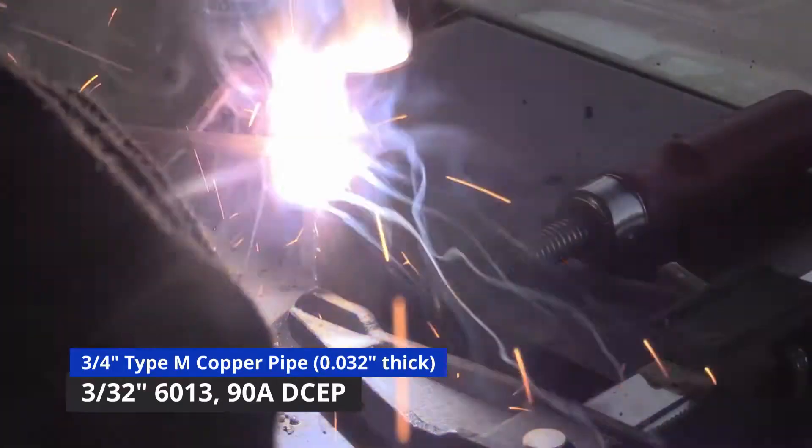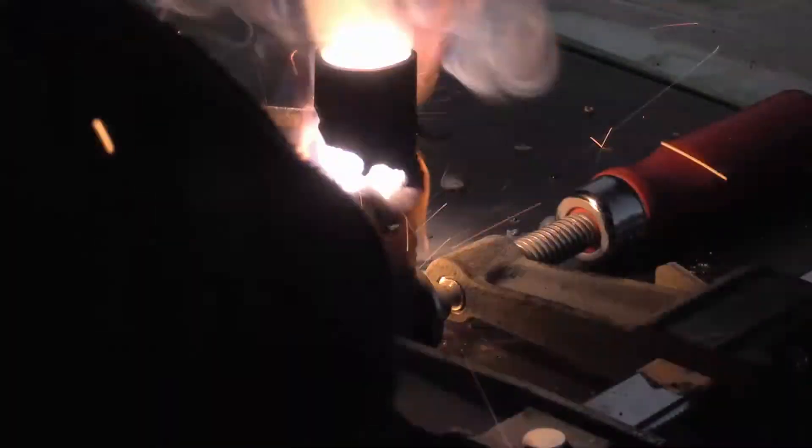The welding rod burns right through this thin copper pipe, but again it leaves a very rough edge, and the copper is now contaminated with iron.